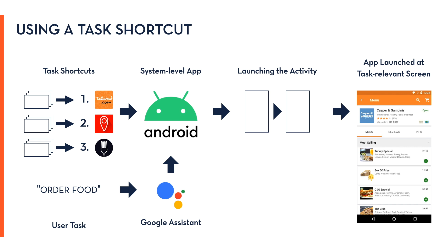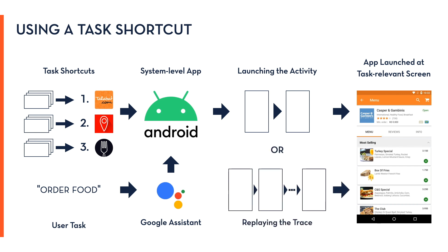Directly launching the activity may sometimes fail, as some activities require prior user input and a specific internal state for those screens to be accessible. When this happens, Savant uses the trace field in the task shortcut and replays the interactions leading up to the component. Although Savant's main goal is to interface with virtual assistants, end users can also directly use Savant through the app. Savant is not a task automation system and does not replicate the functionality of existing programming by demonstration systems. Savant is an unsupervised search system — it merely finds the best matching app screen for a given task.